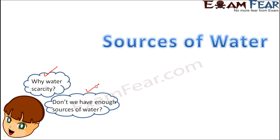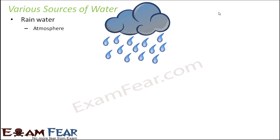Let us talk about the sources of water — what are the things from which we get water. One of the common sources is rainfall. Rainfall gives us water through clouds present in the atmosphere, which precipitate in the form of water droplets. Rainfall is a very important source of water because it provides us with a lot of water.